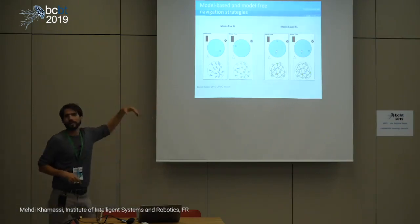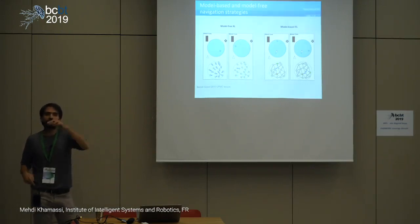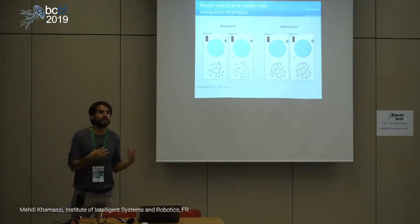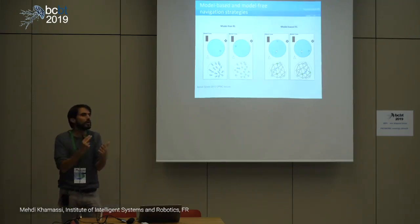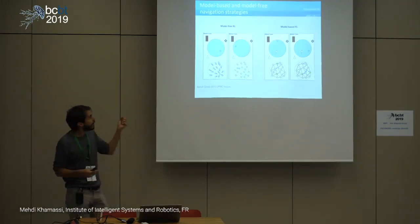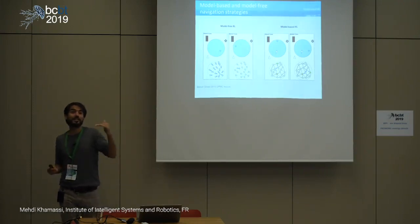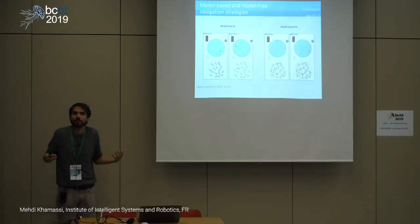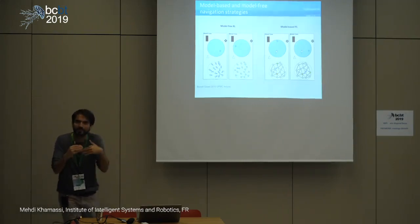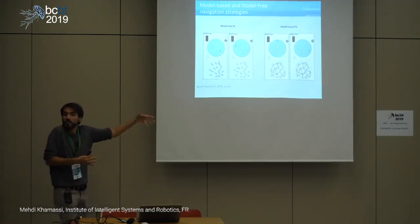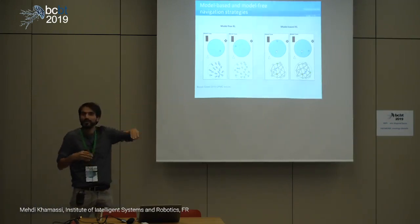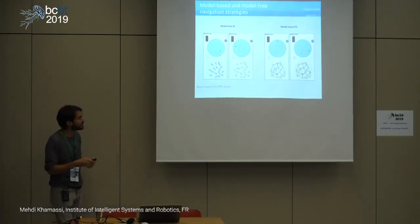For example, vicarious trial and error — why the model should stop at some moment to restart thinking — is one hypothesis: you switch back to model-based and perform an inference process. In navigation, model-free could link to egocentric strategies and model-based to allocentric ones. We wrote a paper proposing that these are actually orthogonal dimensions, since you can do model-free allocentric things.